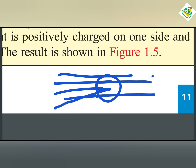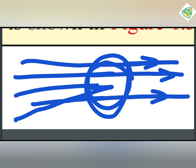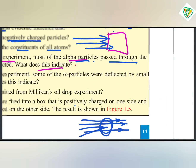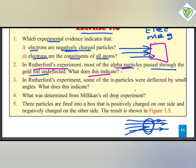Most of the alpha particles passed through the gold foil undeflected, suggesting the atom has a large amount of empty space inside it.